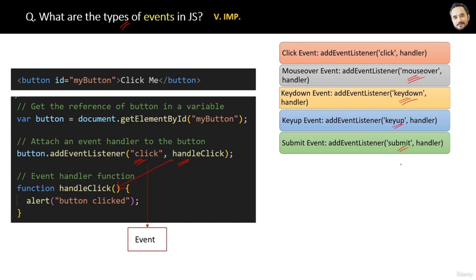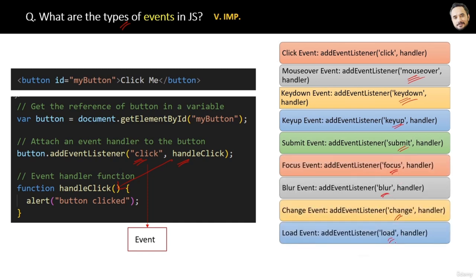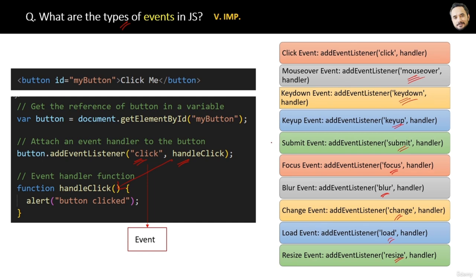Some more events include focus, blur, change, load, and resize, and there are many more. But these are the most important ones — whatever action you take on your web page can be an event, and it can be handled by a handler function. Those were the types of events.